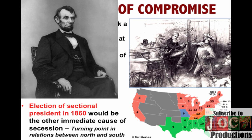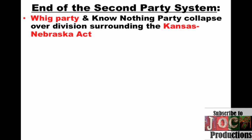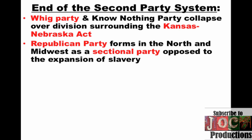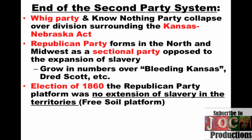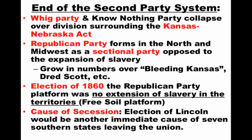One of the other things you see in this period is the end of the second party system. The Whig Party and the Know-Nothing Party — that nativist party — collapsed over the division surrounding the Kansas-Nebraska Act. You get the formation of a new party, the Republican Party, which is truly a sectional party in that it only has support in the North. Their whole platform was opposition to the Kansas-Nebraska Act and the expansion of slavery in the territories. They grew increasingly throughout the 1850s as events like Bleeding Kansas and Dred Scott brought people to the Republican Party. With the election of 1860, the Republican Party adopted a free soil platform, and with Lincoln's election you get the immediate cause of secession — Southerners saw the election of Lincoln as the election of a sectional northern president hostile to slavery.